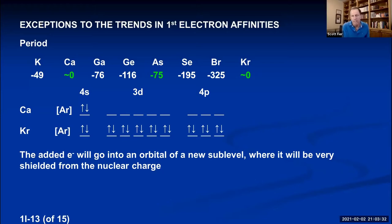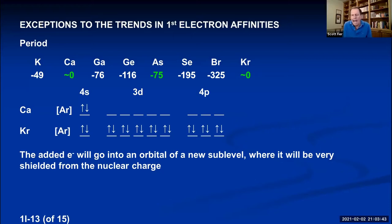This pattern applies to the entire second column of the periodic table: all have their S sublevel filled, so any added electron must go into a new sublevel. Noble gases always have near-zero electron affinities because their P sublevel is filled, forcing the next electron into the S sublevel of the next energy level.